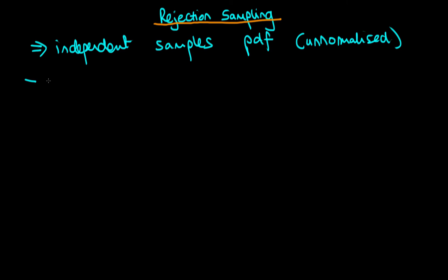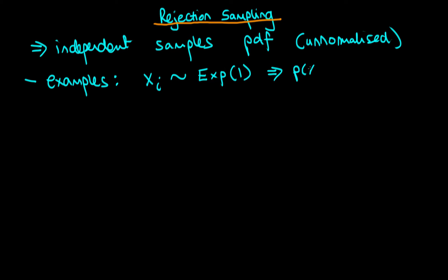The example I'm going to use to illustrate how rejection sampling works is where we're imagining we're trying to generate samples from an exponential distribution with rate parameter one. By writing down the form of the distribution we can work out the exact form of the density — for an exponential distribution with rate parameter one it's just equal to e to the minus x. One important thing to bear in mind is that just because we have an analytic form of the density, it doesn't mean that you can independently sample from that density.